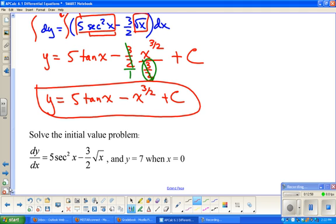So this is 7 equals 5 times zero minus. Well, zero to any power except zero to the zero is in fact zero. So really, this is just 7 equals c.